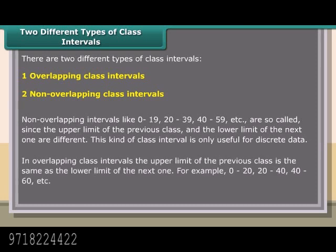In overlapping class intervals, the upper limit of the previous class is the same as the lower limit of the next one. For example, 0 to 20, 40 to 60, etc.